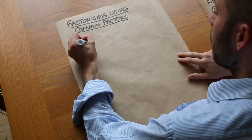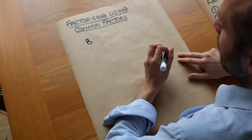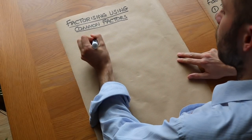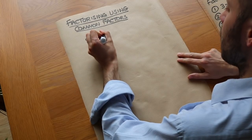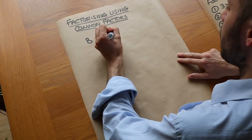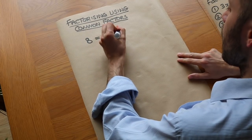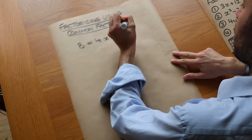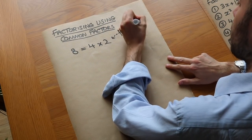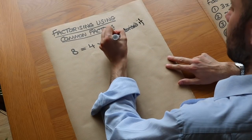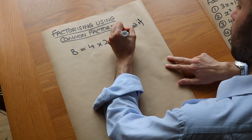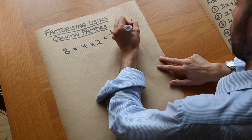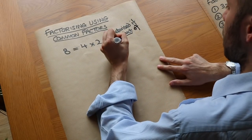Let's suppose we had the number 8 and I asked you for the factors of 8. You might say 2 and 4 are factors, and we could write 8 as the product of 4 and 2. We say it's factorized — factorized means it's a product of numbers, where product means you're multiplying the numbers together.